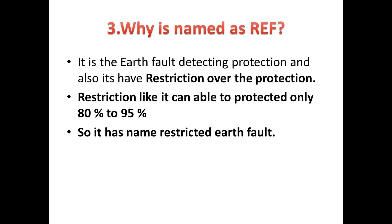Now we go for the third question: why is it named as REF? It is an earth fault detecting protection and it also has a restriction. If we look deeply at this restriction point, it can only protect 80 to 95% of the winding. It has some restriction, and due to this it is named Restricted Earth Fault protection.